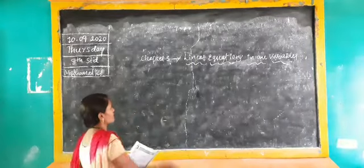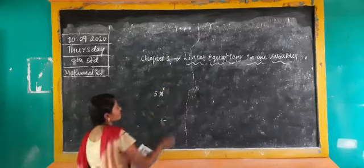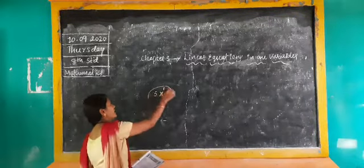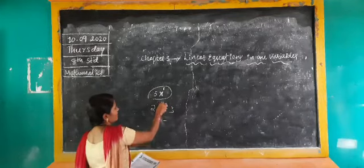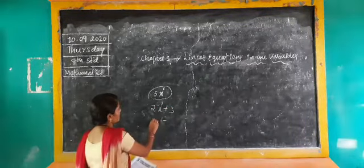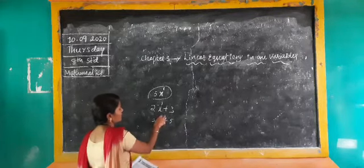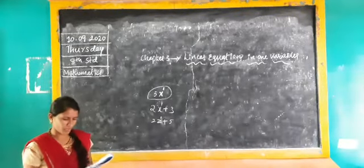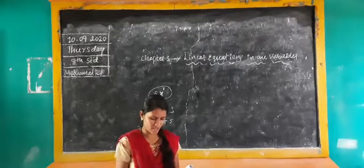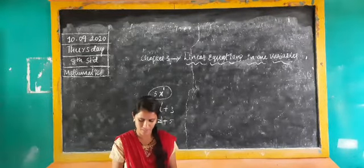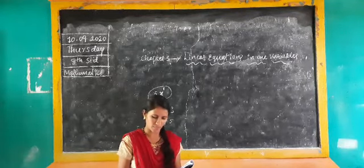What do you mean by a linear equation? For example, 5x — here the degree of x is 1. Degree 1 means it is a linear equation. For example, 2x plus 3 — here also the degree is 1. Another example: 2z plus 5 — here also for z the degree is 1. If degree is 1, it is a linear equation. Here we will deal with equations with linear expressions in one variable only.